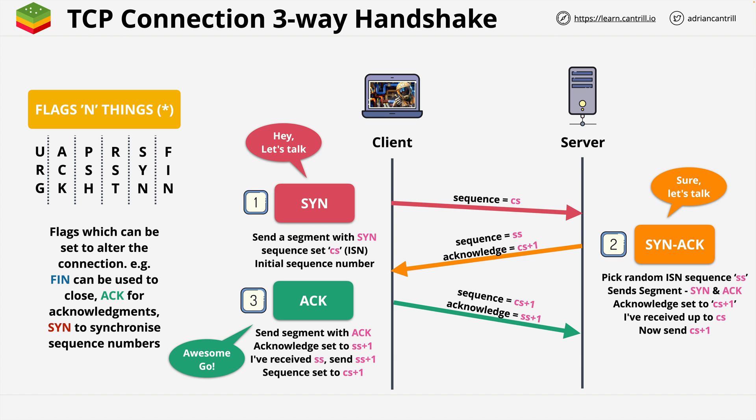Essentially the client is saying, awesome, let's go. At this point, both the client and server agree on the sequence values. The client has acknowledged the initial sequence value decided by the server, and the server has acknowledged the initial value decided by the client. Both are synchronized, and data can now flow over this connection. From this point on, any time either side sends data, they increment the sequence, and the other side acknowledges the sequence value plus one. This allows for retransmission when data is lost.